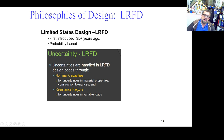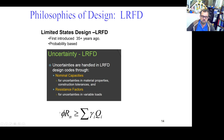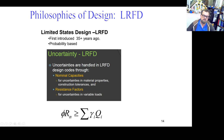We also increase the values of the loads depending on the type of load. And this is what this equation says: the reduced capacity of the section has to be bigger than the summation of all the factored loads acting in that particular situation.